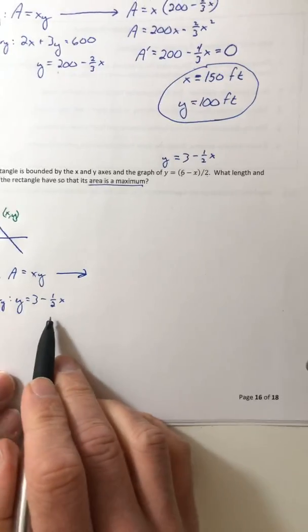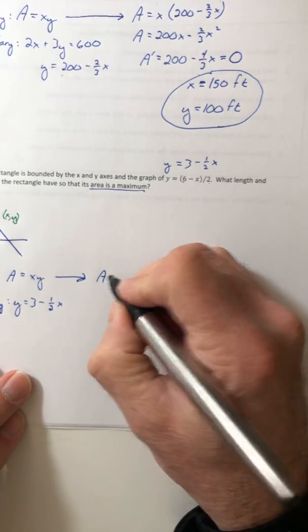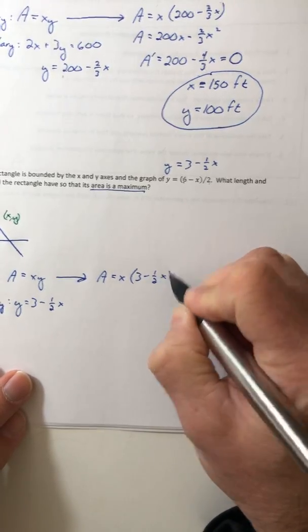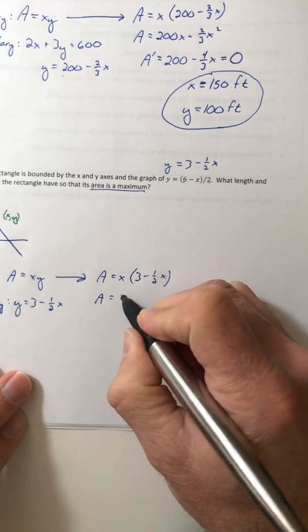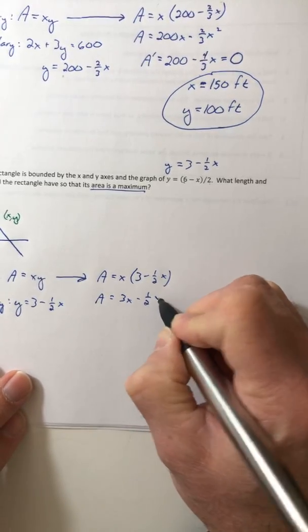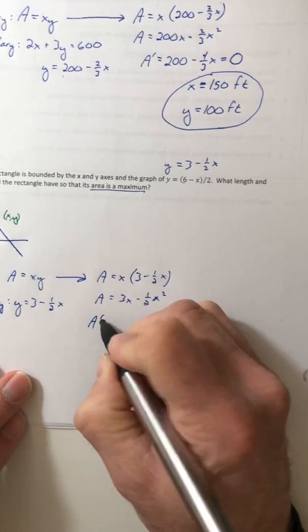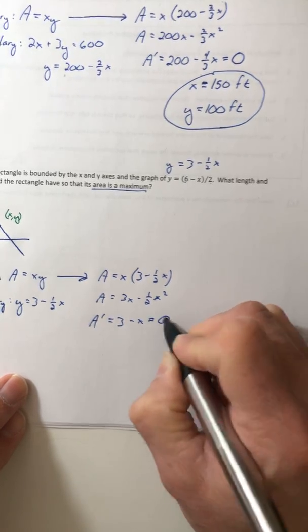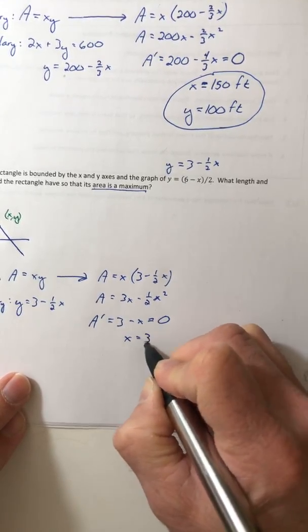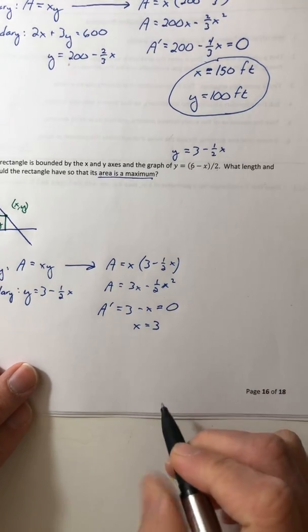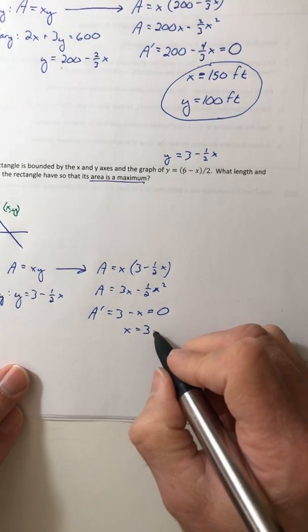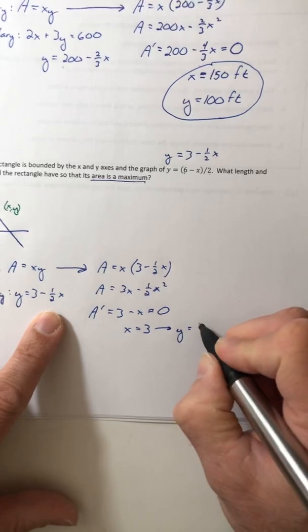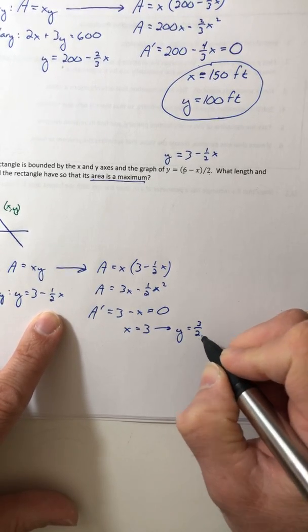Well, this is already solved for Y, so let's just use it. So stick it back in to the area. Let's distribute to make the derivative easier. So our derivative is three minus X set to zero. And X is equal to three. So now I can plug that in right there. And so if X is three, then Y is three over two.